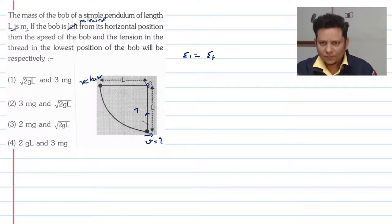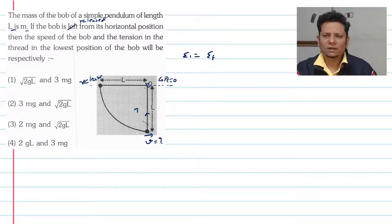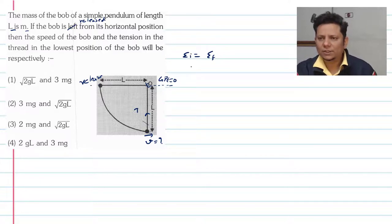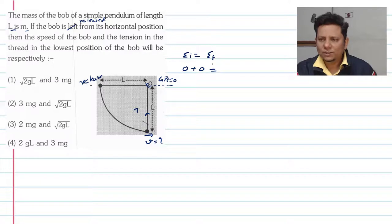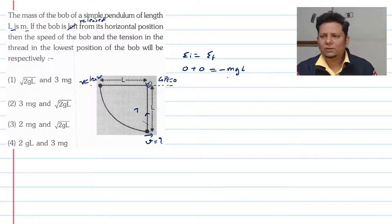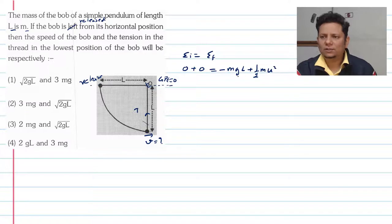इस जगह को हमने reference level माना — यहां gravitational potential energy 0 है। जब particle यहां था, तो initial potential energy = 0 और kinetic energy = 0। जब particle यहां से lowest point पर आएगा, तो potential energy हो जाएगी minus mgl — क्योंकि height में L का drop आया है — plus half mv²।